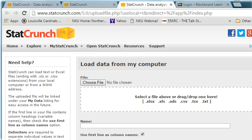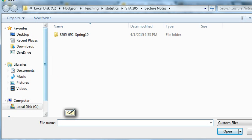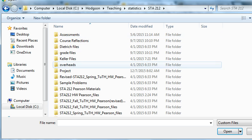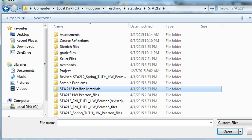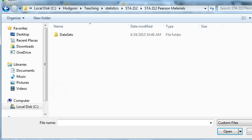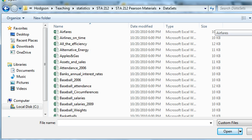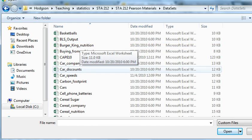I'm going to choose the file and that file is in a particular folder on my computer and that file is called car discounts.